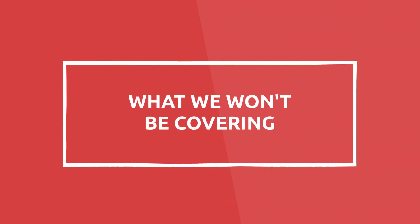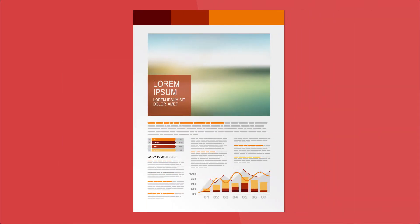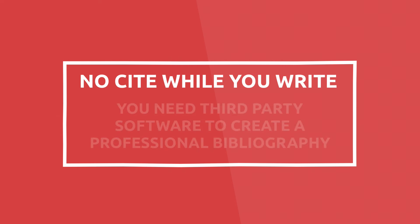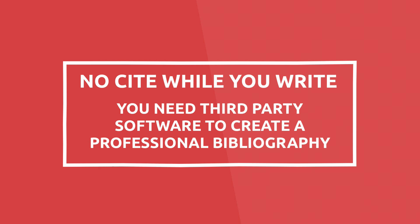Before you commit to this course, I just want to mention that there are certain things Scrivener can't do or are beyond the scope of this course. Even though Scrivener is a brilliant content management and writing application, it's not a desktop publishing application like Adobe InDesign for creating fancy layouts such as brochures or magazines. It's capable of exporting a nicely formatted non-fiction book with images and text, but you can't create columns, sidebars, or text-wrap images. For academic writers, Scrivener does not do cite-while-you-write, so you need third-party software to create a professional bibliography. I'll show you how to set your chosen bibliographic software in Scrivener's preferences menu, but I will not be showing you how to use those apps in this course.